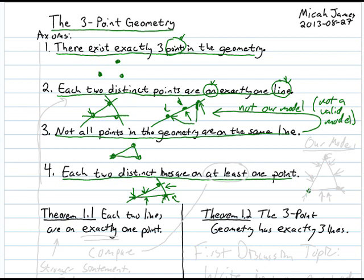So we have a working model: three points and three lines. When considering a finite geometry, you find a model satisfying all axioms, then use it to generate statements you suspect are true. You have to be careful though — your model might have features not inherent to the geometry, so you should draw inspiration from it but never assume that what's true in the model is true in the geometry.